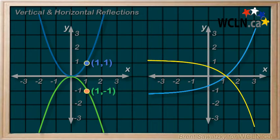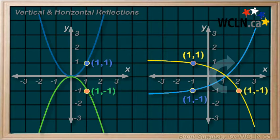They are reflected around the x axis. If the y value is a positive, it becomes a negative. If it's a negative, then it flips to become a positive. And that's a vertical reflection.